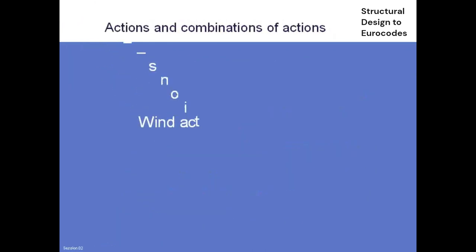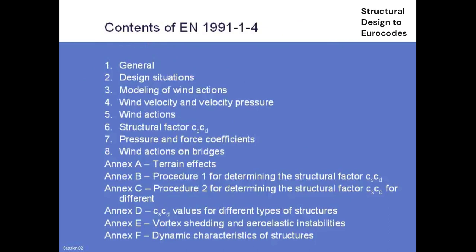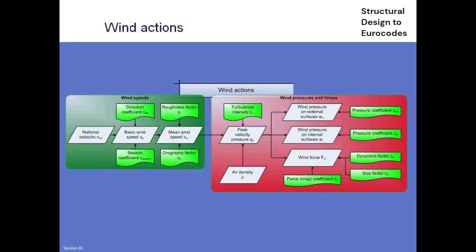Skipping over loads for buildings, we jump straight into wind loading calculations in Eurocode 1.1.4. Most of what you have to do can be summed up by the flowchart diagram, and it's very similar to what we did previously in our code — again because of the heavy UK presence on the drafting team. We start with our wind map to get our basic wind speed, then introduce a direction coefficient and a season coefficient. The national annex has set both of those to 1, so no benefit can be made from them in the UK.